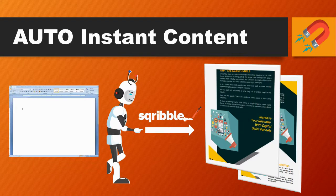This is a massive feature of Scribble — it will allow you to populate your entire e-book with automatic instant content. They've got an incredible content engine where just a few clicks is going to fill out your entire e-book. Just keep watching to find out more.